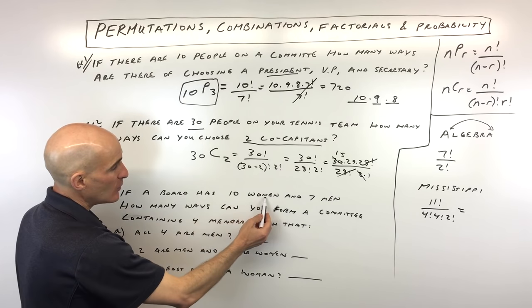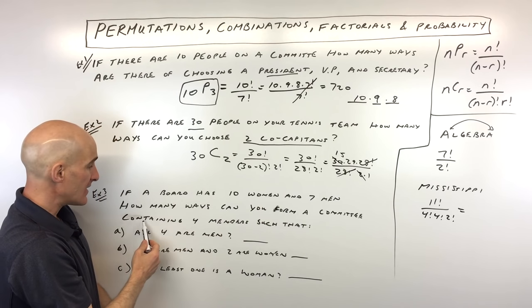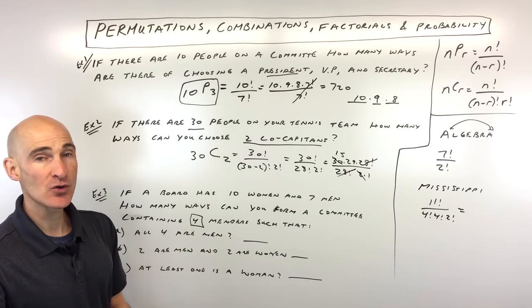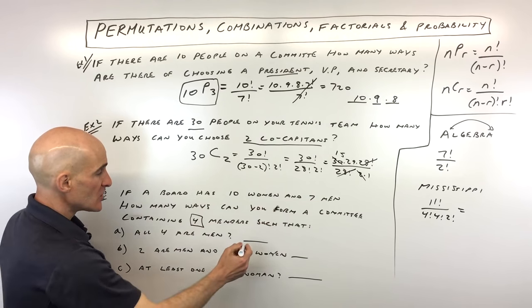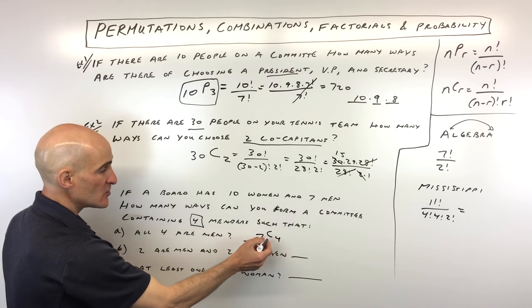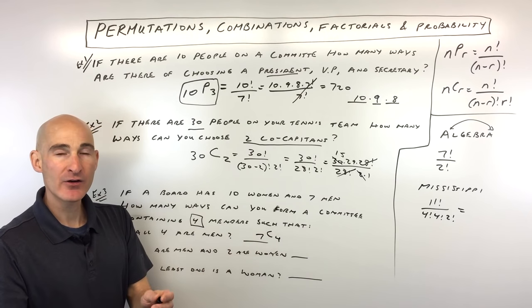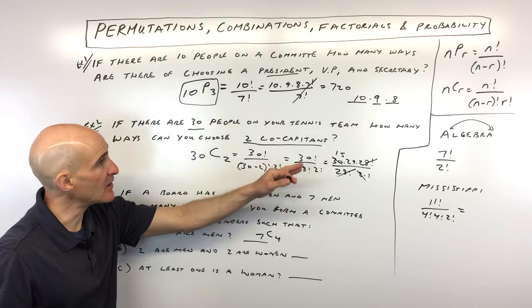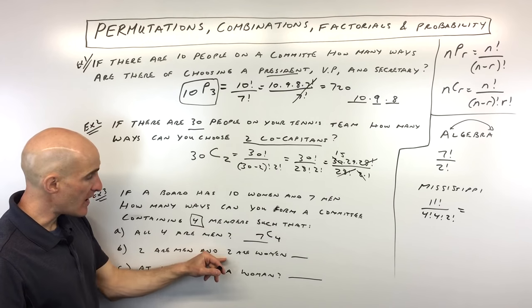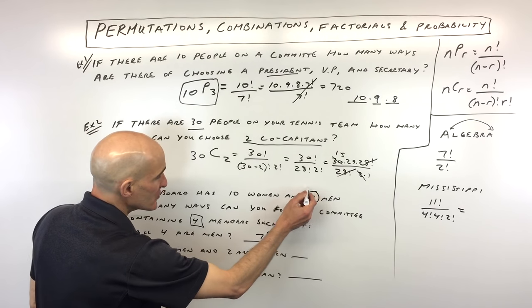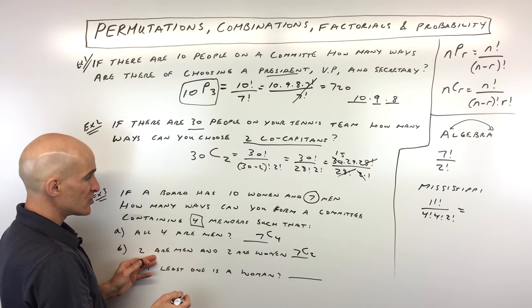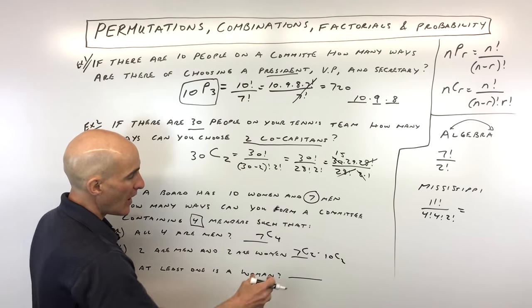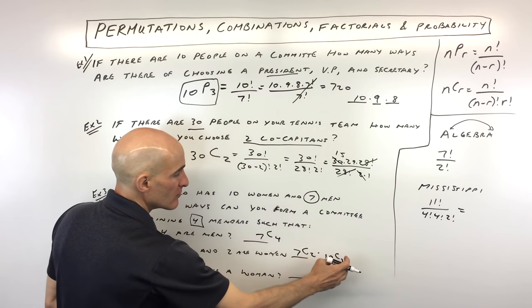If a board has 10 women and seven men, how many ways can you form a four-member committee where all four are men? Out of seven men choosing four — that's 7C4, using combinations since order doesn't matter for a committee. For part B — two are men and two are women — out of seven men we choose two, and out of ten women we choose two, and multiply those together using the fundamental counting principle.